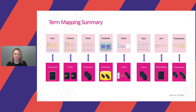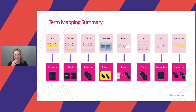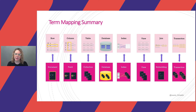To wrap up this section, I created a term mapping summary. It's a lot of information, so go ahead and take a screenshot, tweet it, print it, hang it up at your desk — whatever you want to do. But before we go on, I want you to internalize the first three term mappings: a row maps to a document, a column maps to a field, and a table maps to a collection.